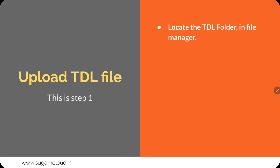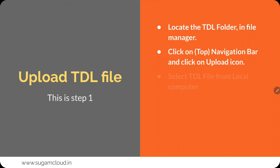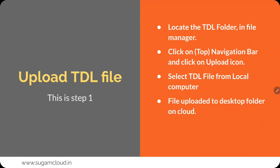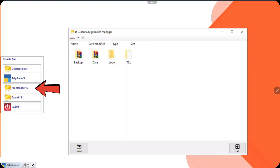You need to locate the TDL folder — I will show you in the file manager. Navigate to the top navigation bar and click on the upload icon. Then select the TDL file from your local computer and click upload. The file is uploaded to the desktop folder in your cloud, and from the desktop you need to copy it to the TDL folder. I will show you the steps on the screen. If you go to file manager, this is your TDL folder — you need to click there, and that is where you put your TDL files.